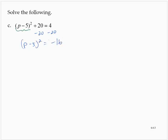Applying the square root property, p minus 5 is the positive or negative square root of negative 16. Now, here we have to be careful. The square root of negative 16 is not a real number.